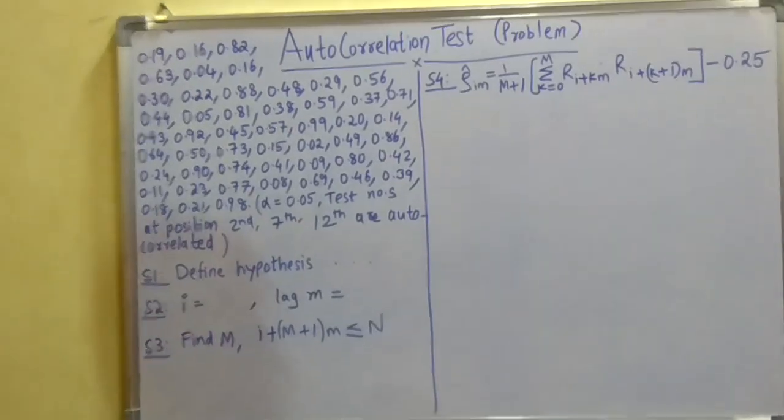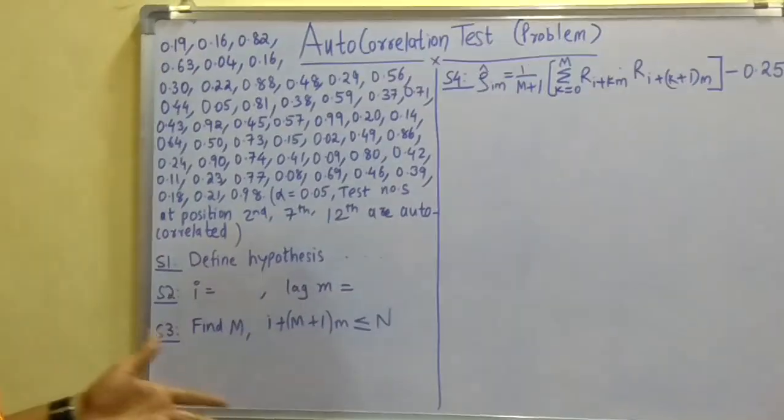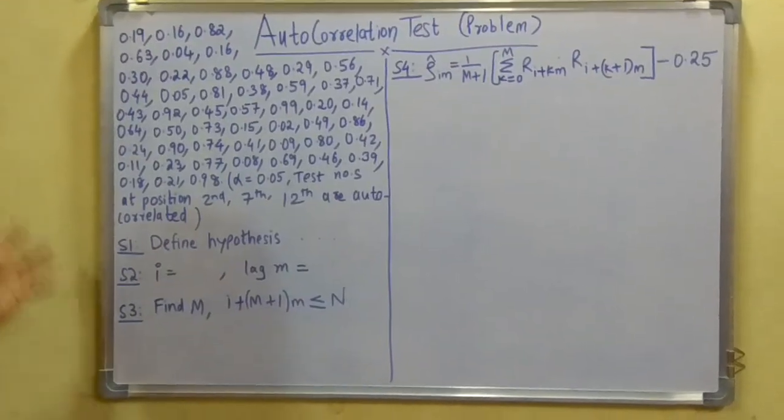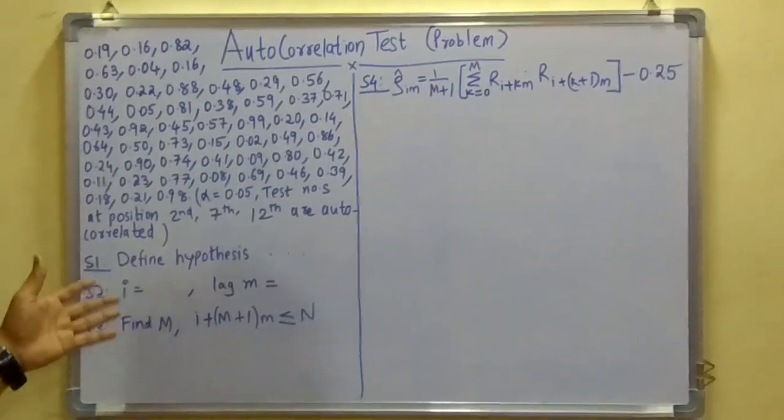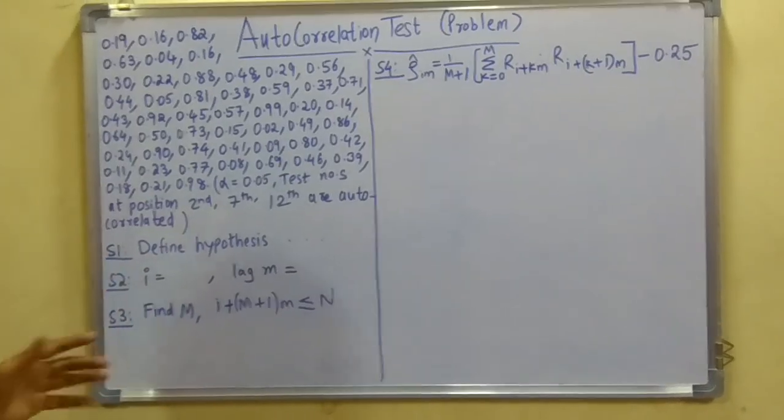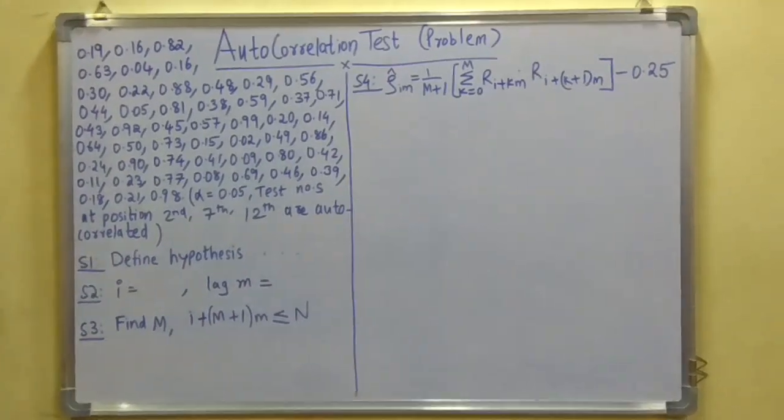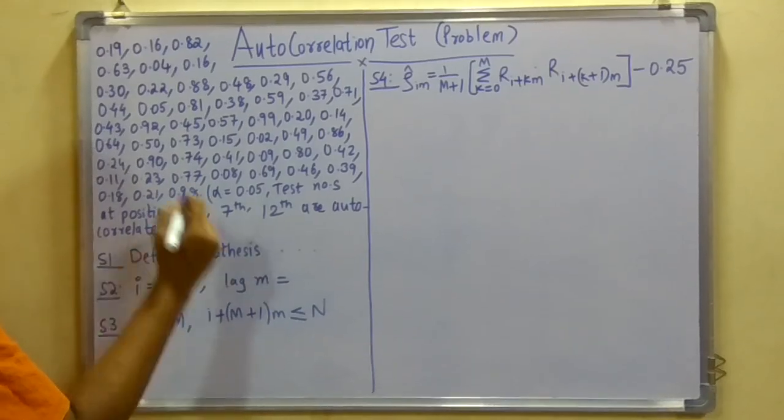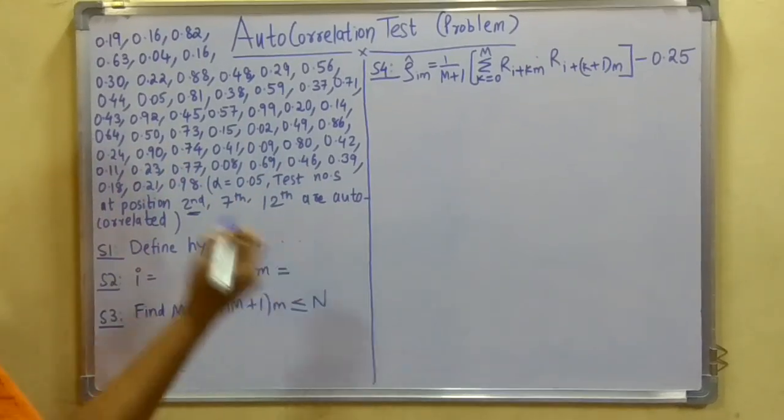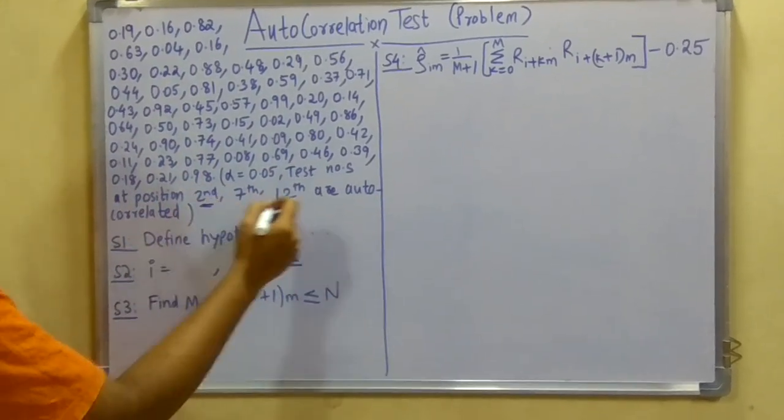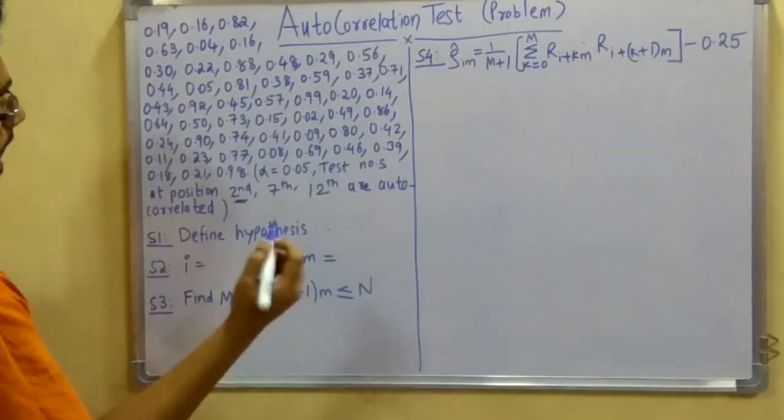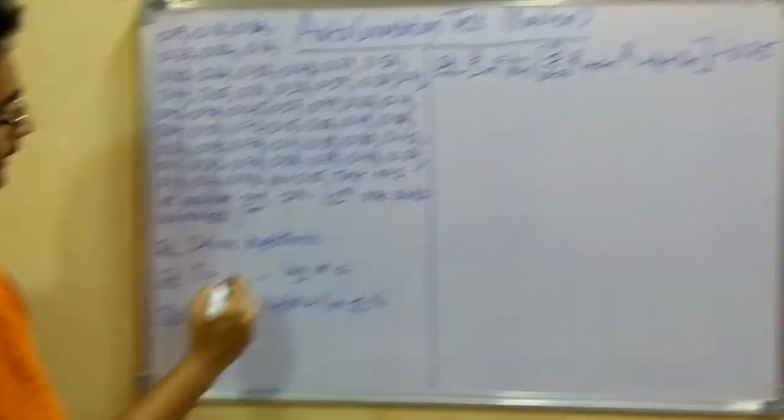Now first step remains the same for all the problems, to define the hypothesis. Next is to determine the value of i as well as lag m. Now i stands for the first value. Now first value you can see is the second. That they have said that the position at 2nd, 7th and 12th. So 2nd is the very first number. So we will assign 2nd to i.